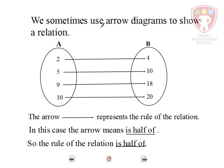We sometimes use arrow diagrams to show a relation. Look at this arrow diagram or also known as a mapping. 2 maps onto 4. 5 maps onto 10. 9 maps onto 18. And 10 maps onto 20.